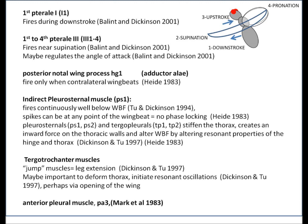Finally, the tergotrochantar muscles. These are not found in all insects — for instance, syrphid flies don't have any — but they do seem to be present in Drosophila. They tend to be the jump muscles, causing leg extension, quite useful when taking off. They might also be important in deforming the thorax, initiating the resonant oscillations, and perhaps also involved in opening of the wing. That's it for the muscles — thank you very much.